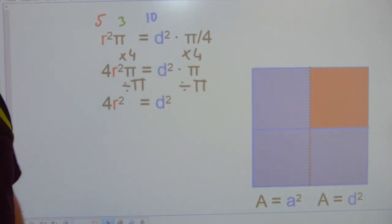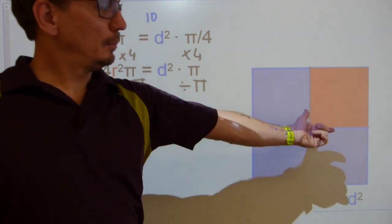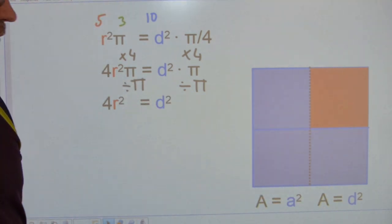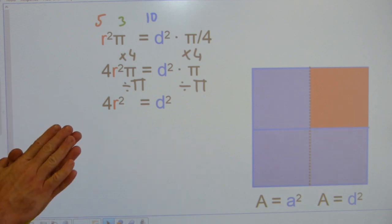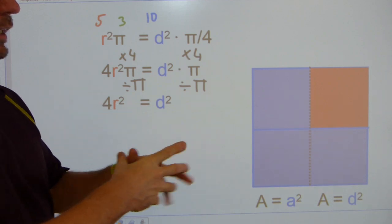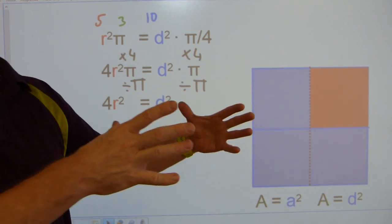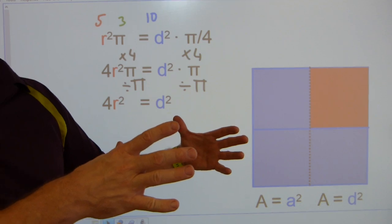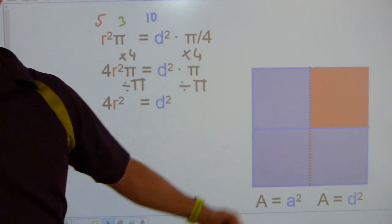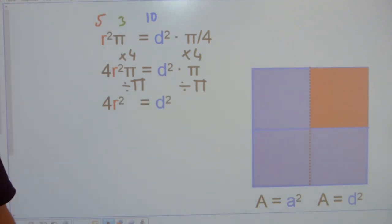Likewise, if you double the size of a pipe, let's go to a pipe fitting context for just one sentence. If you double the size of the pipe, you're going to be having 4 times the area.